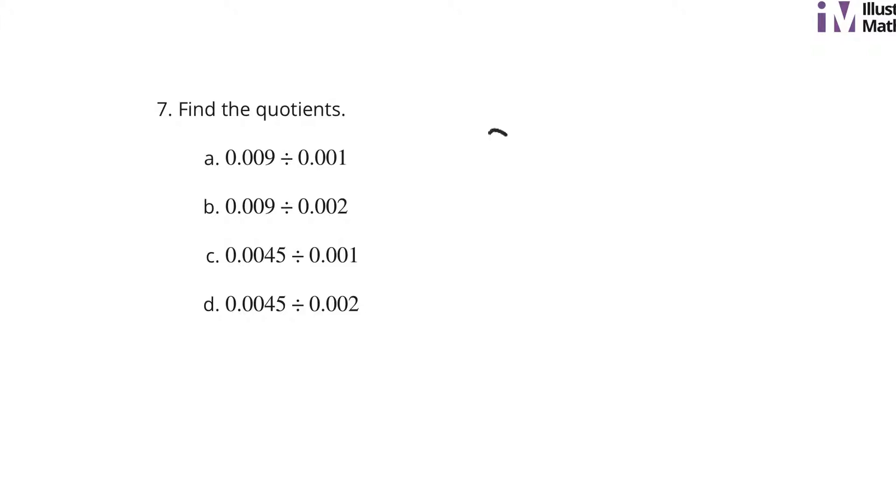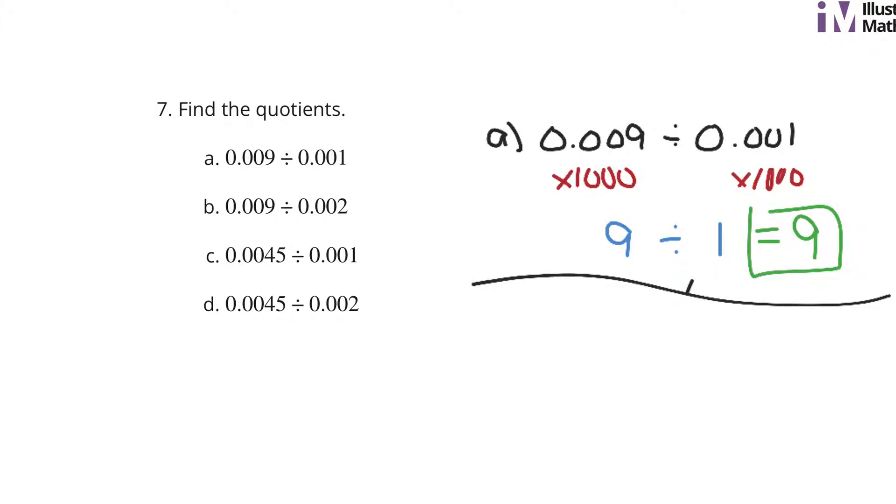And our last question on this lesson, find the quotients. For 1a, we have 0.009 divided by 0.001. Well, if we multiply both those by 1,000, multiplying the numbers by the same thing does not change our division problem. We end up with 9 divided by 1. I think we can all do that. That simply equals 9. What about b? We have 0.09 divided by 0.02. Same concept here. If I multiply both by 1,000, we get 9 divided by 2, which this time is 4 1/2.